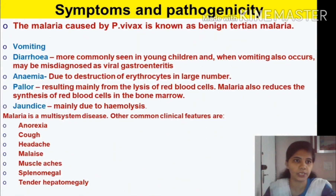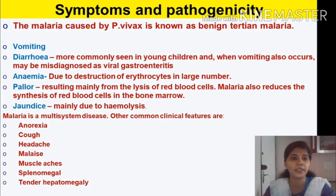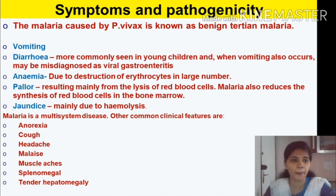Now let us look at the symptoms and pathogenicity. As a parasite, Plasmodium vivax causes many harms. Malaria caused by Plasmodium vivax is known as benign tertian malaria. The symptoms include vomiting, diarrhea — more commonly seen in young children and sometimes misdiagnosed as viral gastroenteritis — anemia due to destruction of large amounts of red blood cells, pallor resulting from lysis of red blood cells, and jaundice mainly due to hemolysis.